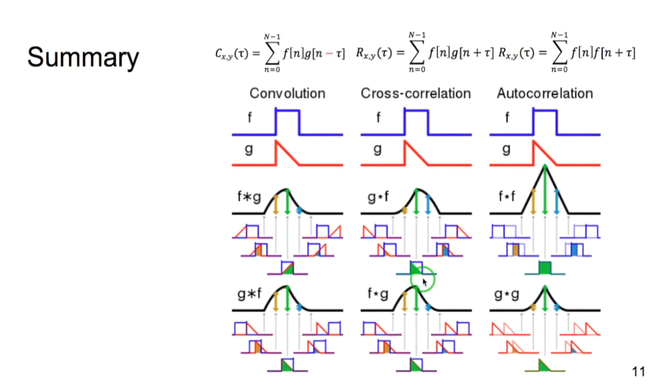So to summarize, we have our three transforms: autocorrelation, cross-correlation, convolution. They have similar forms. Cross-correlation is an autocorrelation with two different signals rather than the same signal. And convolution reverses one of the signals. And this figure comes from the Wikipedia page for convolution. And it's a very useful page.